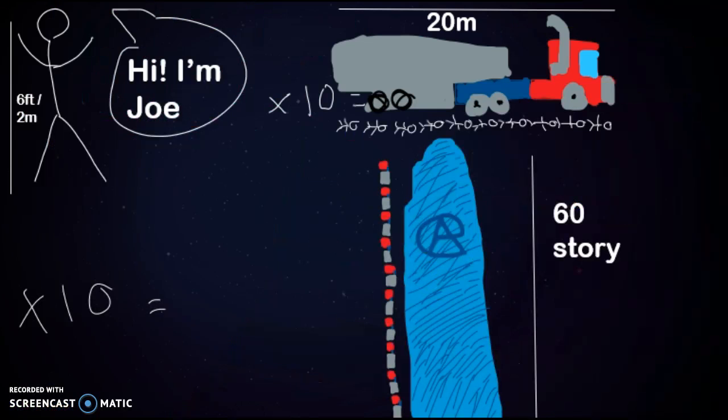Okay, let's start with something our brains can comprehend. This is your average Joe, who is 2 meters or 6 feet. If you multiply him by 10, you get an 18-wheeler or a 20 meter truck. And if you multiply that by 10, you get a 60 story skyscraper. But it's something we can still comprehend, it's not too mind-blowing yet.